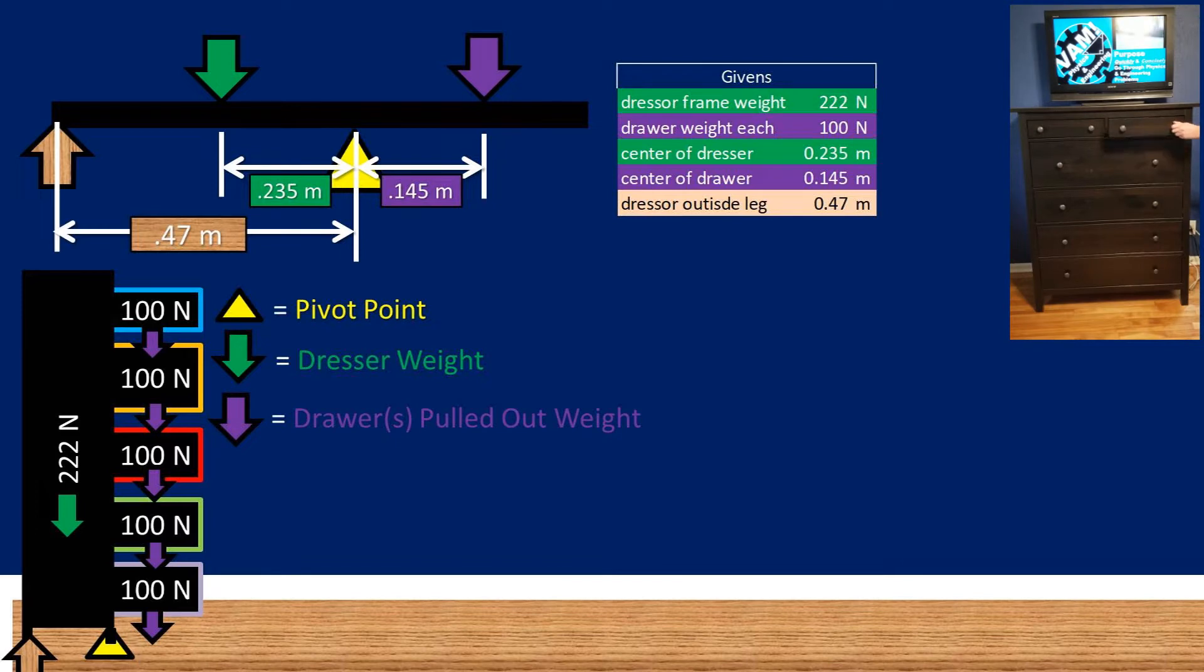Now in order for the dresser not to fall through the floor, there must be a force acting at the back leg of the dresser, pushing the dresser so it cannot rotate. This is marked as a wood grain arrow and is 0.47 meters from the pivot point.